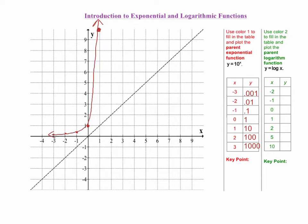Now that you've graphed the parent exponential function, let's talk about the key point. Every function that we've studied has an important point. For radical functions it was the starting point. For quadratic functions it was the vertex. Now for exponential functions the key point is (0, 1). We will discuss the significance of this key point soon.